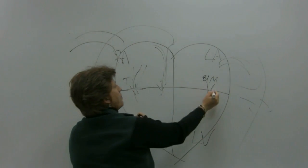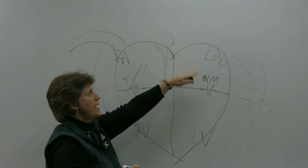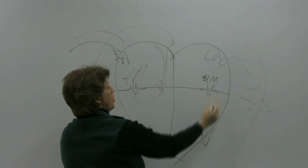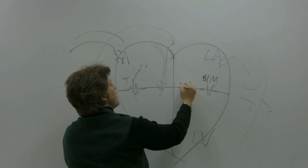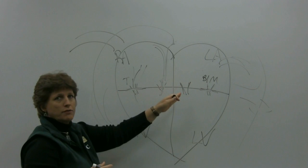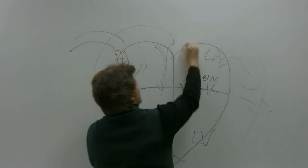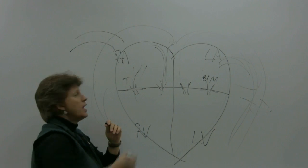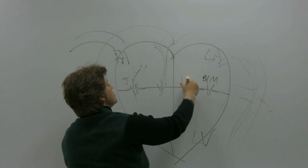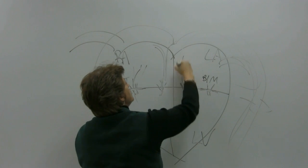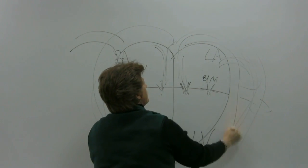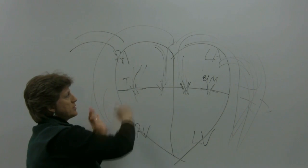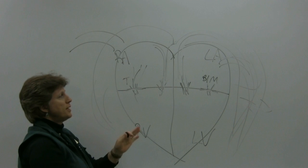From the left atrium, the blood has to go through the bicuspid or mitral valve to get into the left ventricle. That valve then closes so blood doesn't back up into the left atrium. Then the aortic valve opens — it's called the aortic valve because it's the aorta that takes the blood out to the whole body. So the blood goes through the aortic valve, into the aorta, and out into the body.